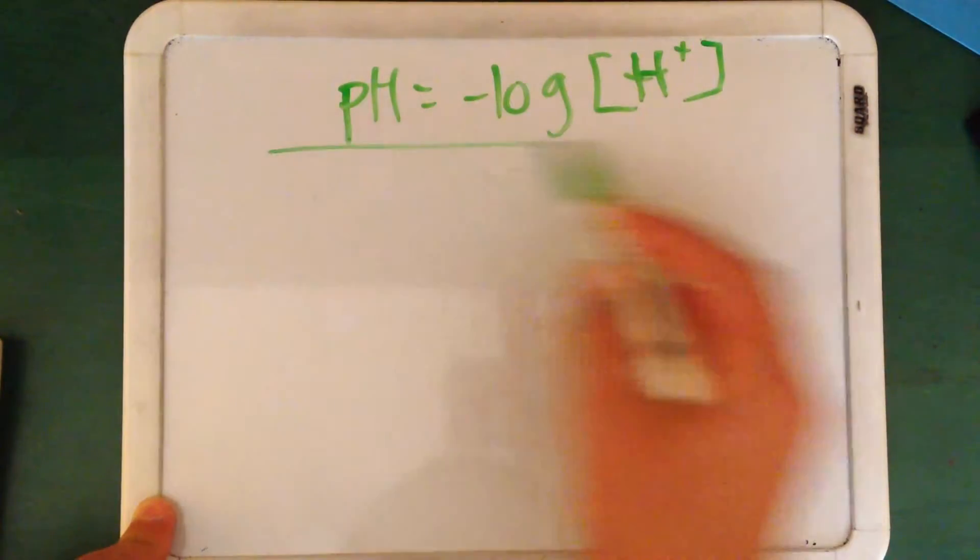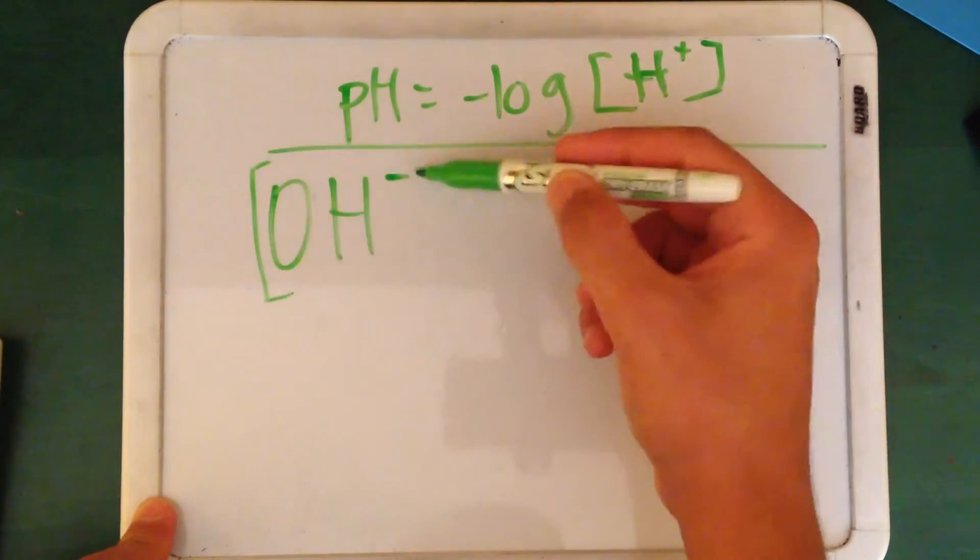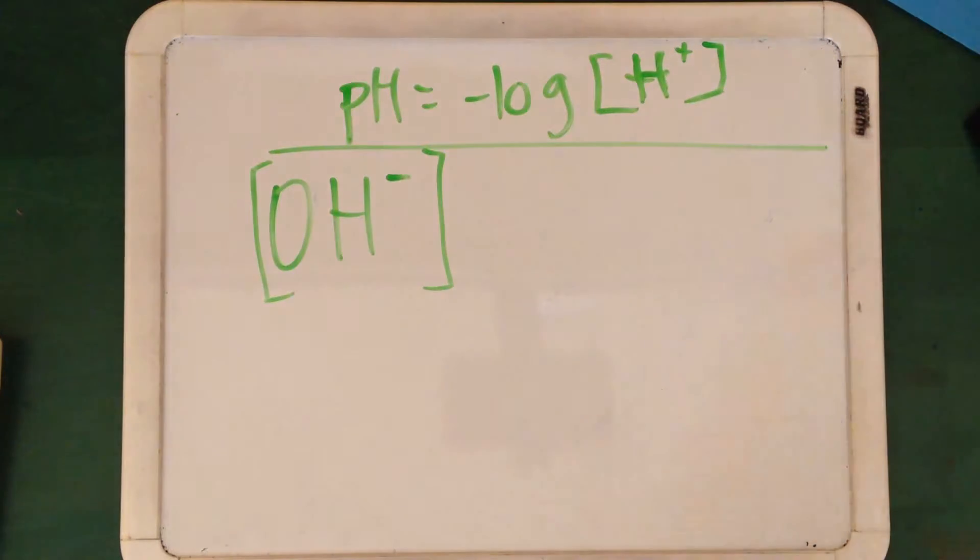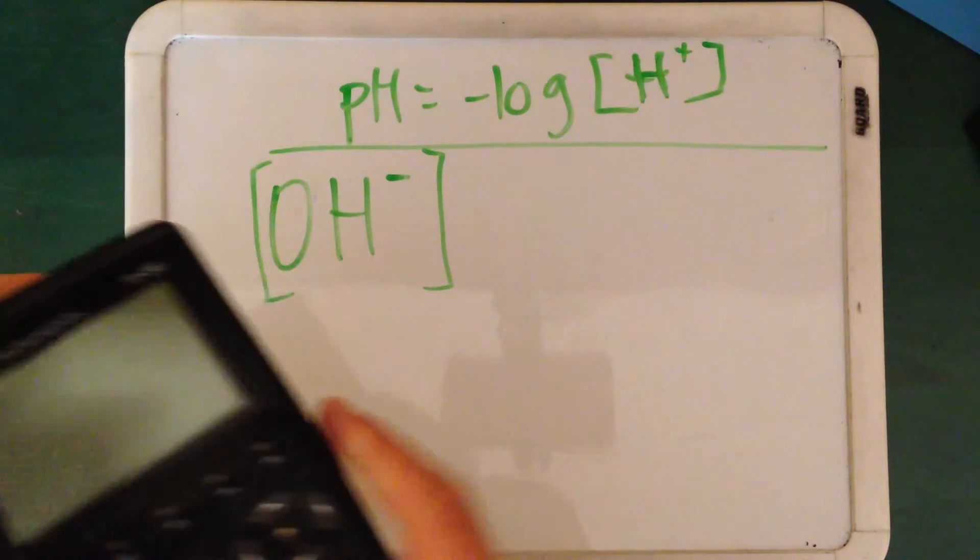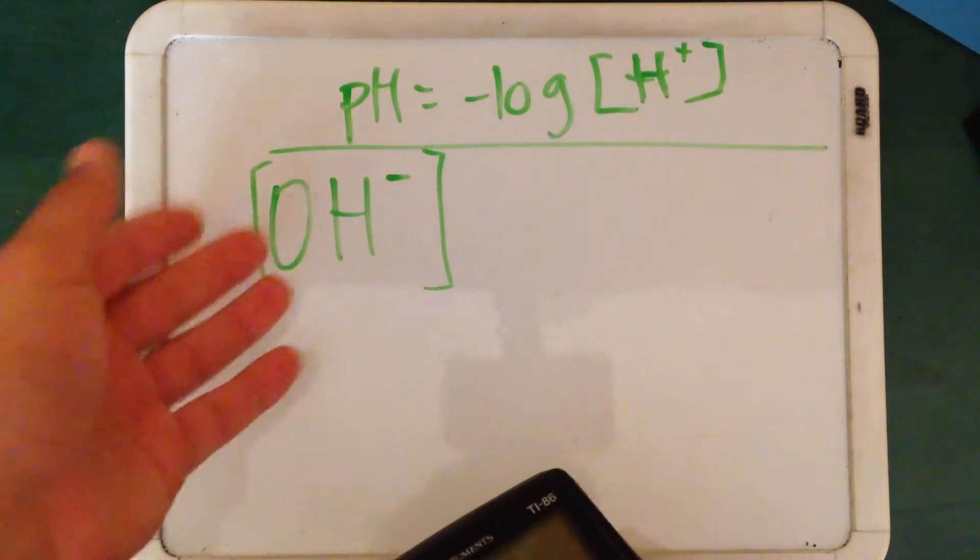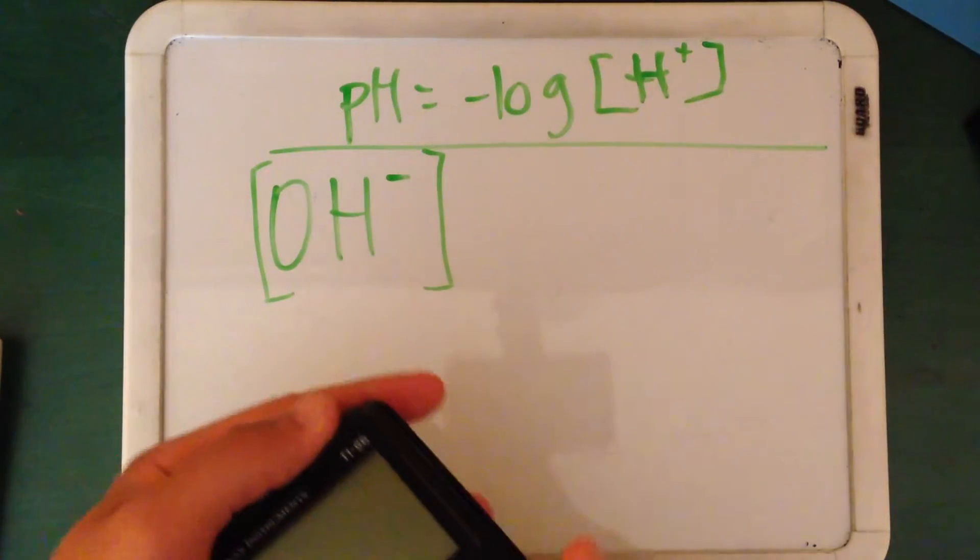But let's say what happens if you're given an OH minus? You are going to have to, there's a number which is constant, and you always use it for any problem. And that number is 1.0 times 10 to the negative 14. You use that for always when you're finding the OH. We're given OH, and then you convert that to H plus, and you plug it into this equation. And then you get the pH.